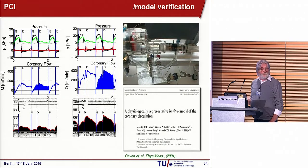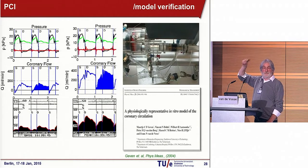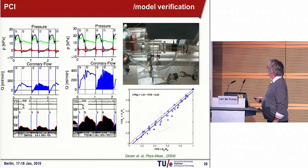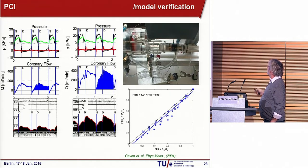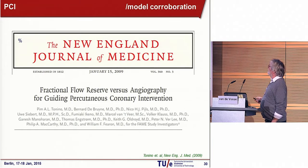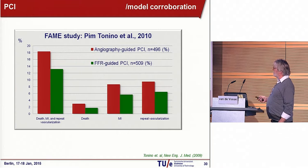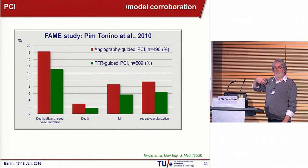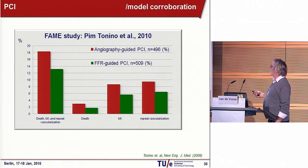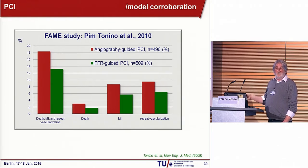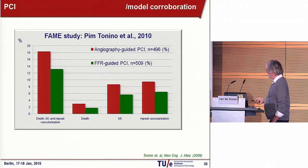What you can then do is also build an experimental setup to see if this simple model — this FFR we introduced earlier — indeed predicts what the complex model would predict. This is done, and here you see the result. This is the FFR based on pressure measurements — the real FFR — and this is the FFR based on flow measurements, and they correlate quite well. That's the moment you can introduce the model into the clinic, and that's what we did. This model corroboration ended up in a famous paper by Pim Tonino, one of our PhD students — a study showing that if you use this FFR as a guideline to intervene, you can reduce complications by 30% compared to only angio-guided PCI. This is a very nice result from a very simple model.